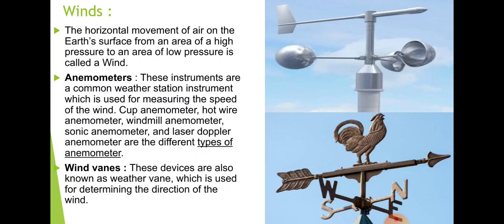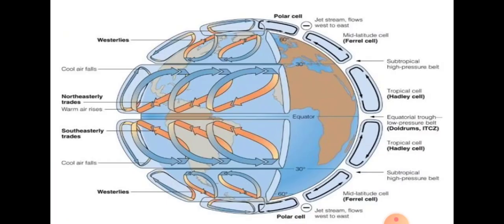The wind vane is the instrument or device used to know the direction of the wind — in which direction the wind is blowing. Wind is always named after the direction from which it blows. When wind blows from the north or southern side, they are known as north or south wind. Based on the direction, winds are given their names.